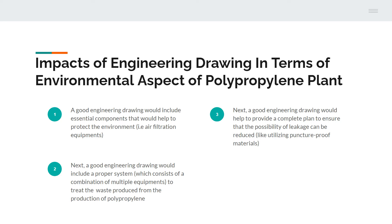The next point would be that a good engineering drawing would also include a proper system consisting of a combination of multiple equipment to treat the waste byproducts from the production of a polypropylene plant. A good engineering drawing would need to suggest a method to allow engineers and workers to actually treat the waste, so that it would not be released into the environment, which can lead to multiple types of pollution such as air pollution, water pollution, and pollution that harms aquatic life.